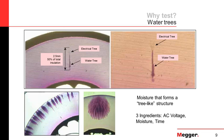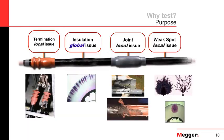You can have water trees all over your cable — coming from the conductor or from the semiconductor. Only one of these needs to convert to something called an electrical tree, which is a carbonized path, to create a cable failure. Because water trees can occur all over your cable, this is considered a global issue. You also have more localized issues, like a bad joint, a bad termination, or a localized weak spot such as an insulation dig-in.